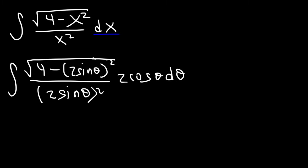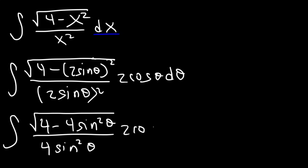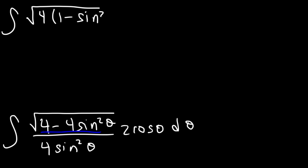Now let's perform some algebra to simplify this expression. 2 squared is 4, so 2 sine theta squared is going to be 4 sine squared theta on the top, and on the bottom we're also going to have 4 sine squared theta. At this point we need to take out a 4 inside the square root so we can get 1 minus sine squared — giving us the square root of 4 times 1 minus sine squared theta.